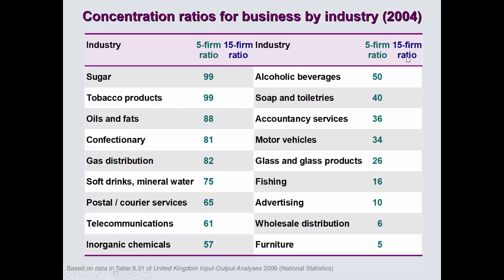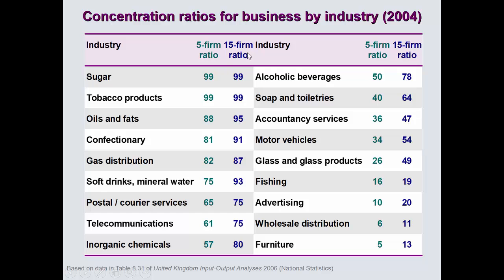Looking at the 15-firm ratio, the picture is slightly different — we're now looking at the share of the 15 largest companies in the whole industry. Again, the sugar industry is still dominated by this handful of firms, and shares rise as we increase the number of firms included. The stricter measure of monopoly is usually the five-firm ratio or even a two or three-firm ratio. As you can see, competitiveness declines as larger firms dominate more of the market.